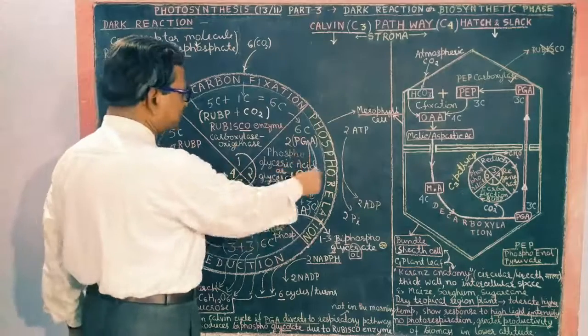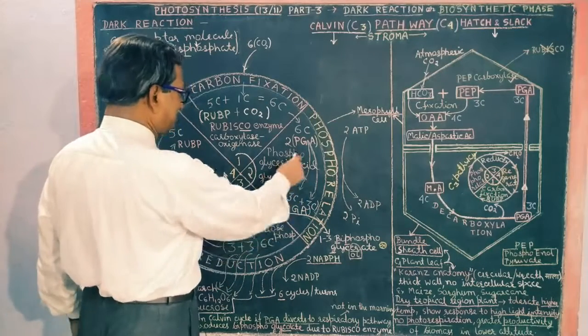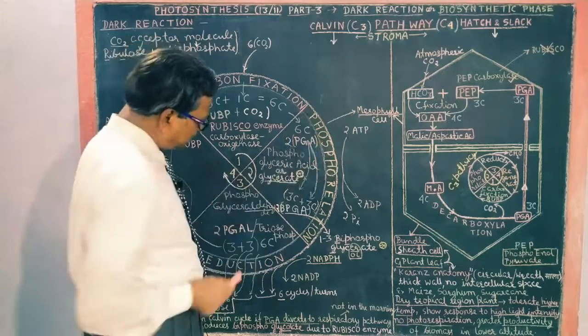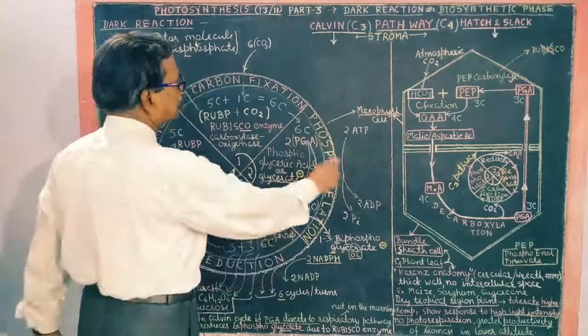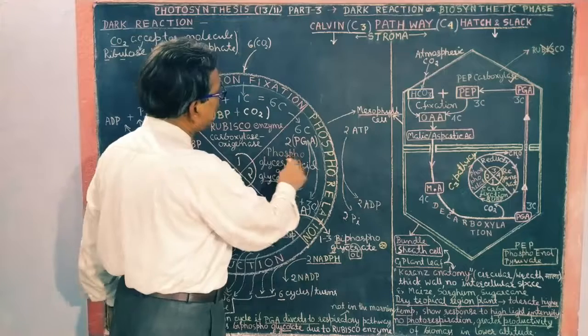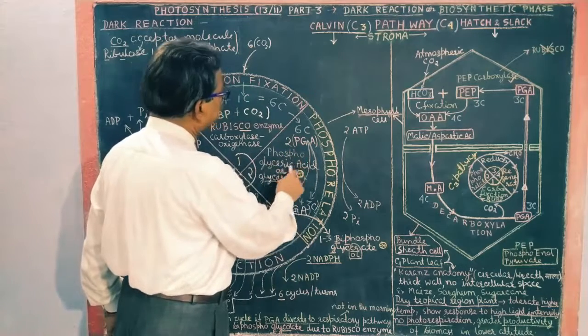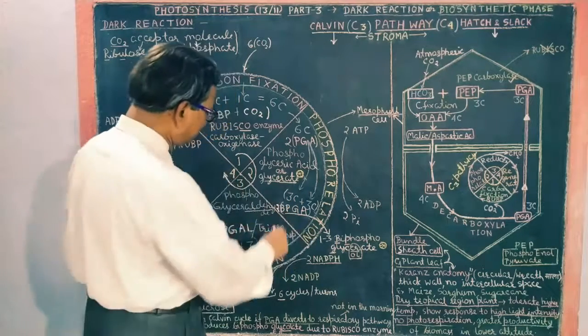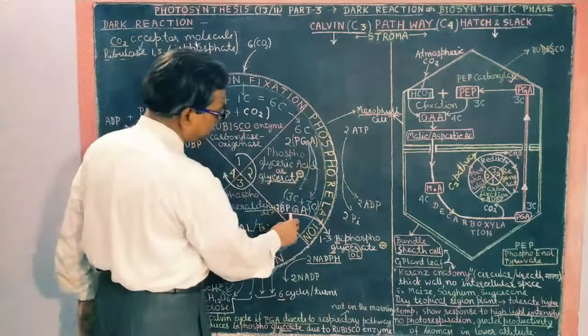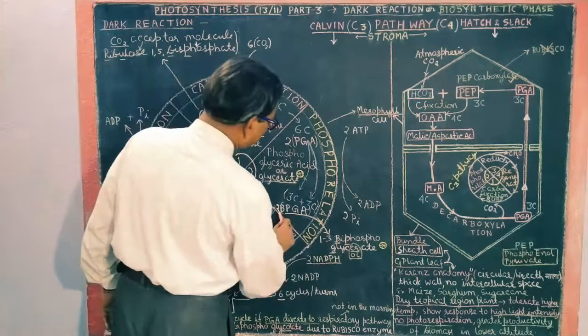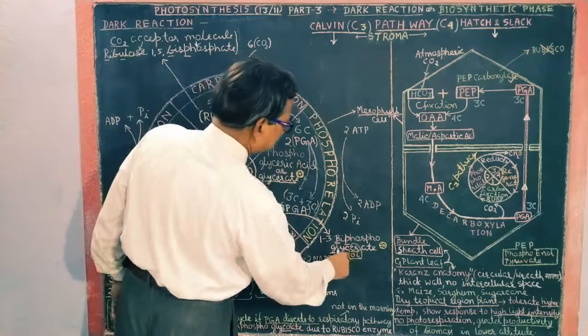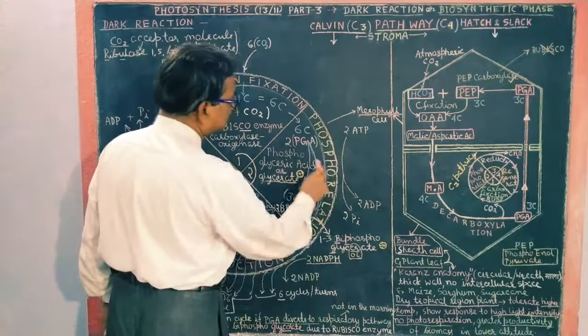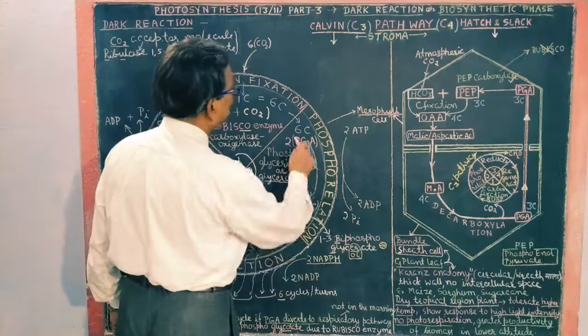So here it becomes 2 PGA which is phosphoglyceric acid. Here it becomes phosphorylation. Phosphorylation means addition of phosphate. So here it becomes phosphoglyceric acid, 2 PGA. One phosphate is added to 2 PGA.